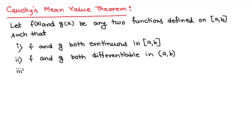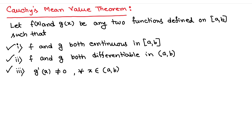And number three: g'(x) will not equal zero for all x belonging to the open interval (a, b). So in Cauchy mean value theorem, we have three conditions. First, f and g are continuous on [a, b]. Second, f and g are differentiable on (a, b). And third, the first derivative of g must be non-zero in the open interval (a, b).